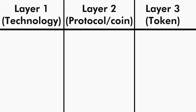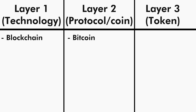In the crypto world there are mainly three important layers. Layer 1 is technology, Layer 2 is protocol and it also includes coin, and finally Layer 3 is token. In Layer 1 that is technology we have blockchain, which we already discussed in section 1. In Layer 2 that is protocol we have things like Bitcoin. It is very important to understand that Bitcoin is not just a coin, it's not just a currency — it's an actual protocol.